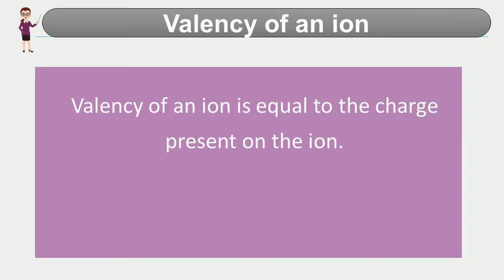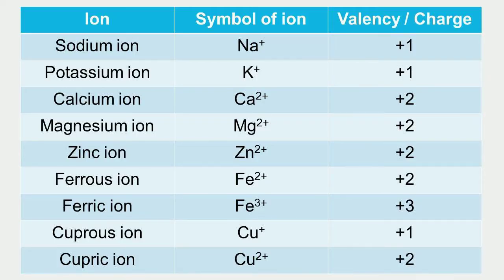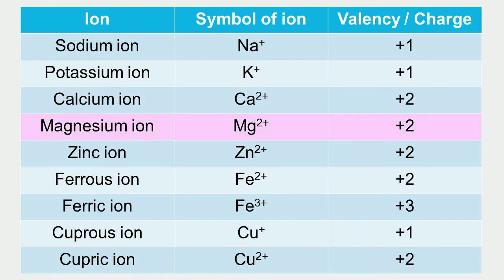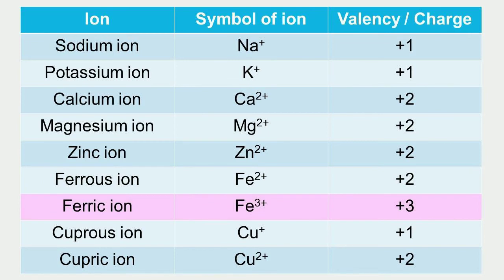The valency of an ion is equal to the charge present on it. These are some cations: sodium ion carries +1 charge, so its valency is +1. Similarly, potassium also carries +1 charge, so its valency is +1. Calcium carries +2 charge, so its valency is +2. Valency of zinc ion is +2. Ferrous ion has valency +2 and ferric ion has valency +3. Cuprous ion has valency +1 and cupric ion has valency +2.